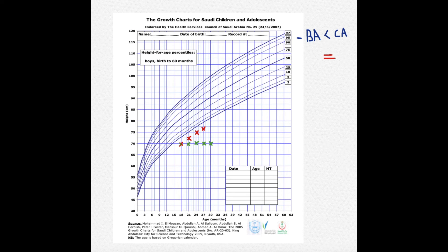What if the bone age equals the chronological age? That also leads to two possibilities depending on velocity. If the child is following the curve, it most probably has a familial cause — the child's family has a predicted height range in that zone, so it's a familial thing. If it's not following the curve, the child most probably has a genetic problem like Turner syndrome or Down syndrome.